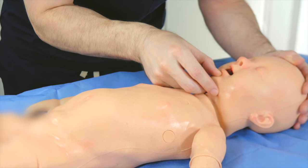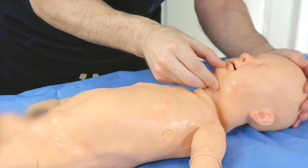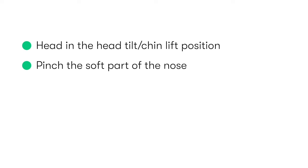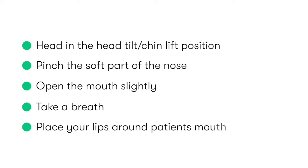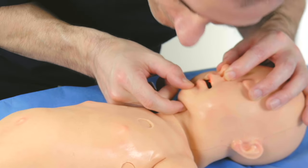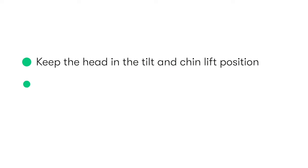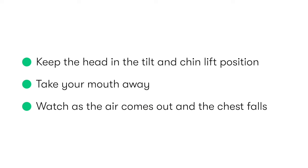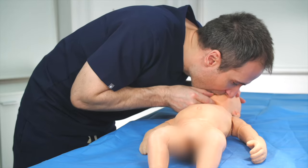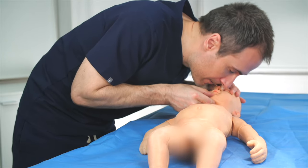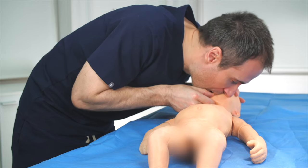To deliver rescue breaths, we ensure head tilt chin lift is achieved, extending the head into a sniffing position. Then whilst pinching the soft part of the nose, we slightly open the mouth. We then take a good breath and place our lips around the patient's mouth, ensuring that there's a good seal. We blow steadily for one second, enough to see the child's chest visibly rise. Whilst maintaining head tilt chin lift, we remove our mouth away from theirs and watch as the air comes out and the chest begins to fall. We take another breath and repeat this process a further four times, each time ensuring the chest rises to the same extent as it would during a normal breath.